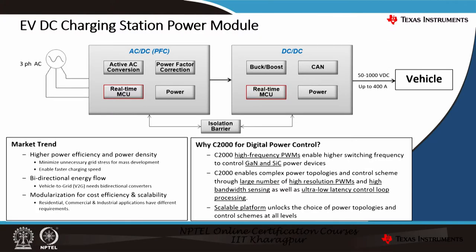Starting with one of the applications — an electric vehicle DC charging station power module — it looks like this, where a three-phase AC grid voltage is connected to an AC-DC power factor corrector unit, which ultimately feeds its voltage into the DC-DC unit. Lastly, there is a vehicle which gets charged because of it. There is an isolation barrier in between as well.